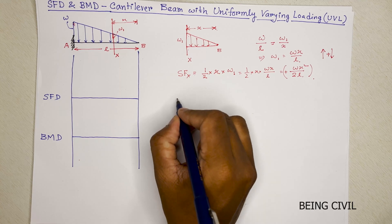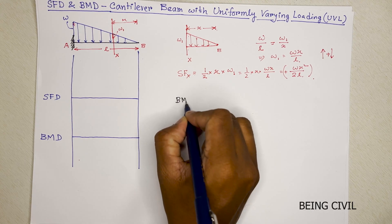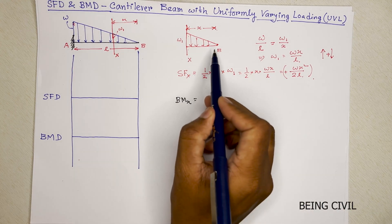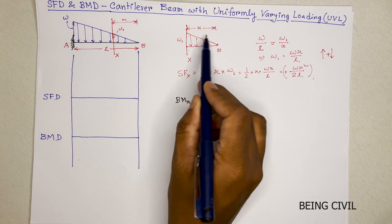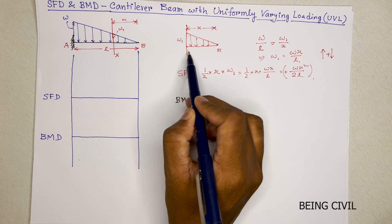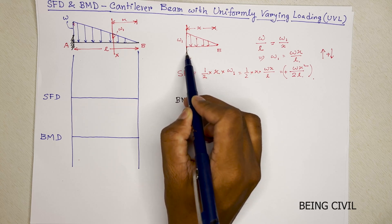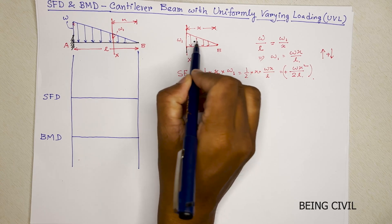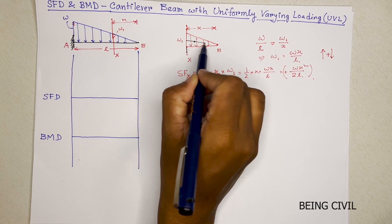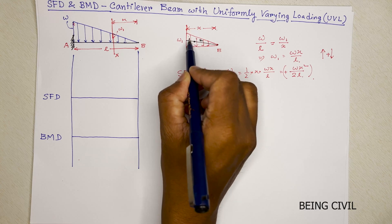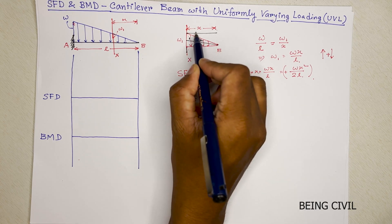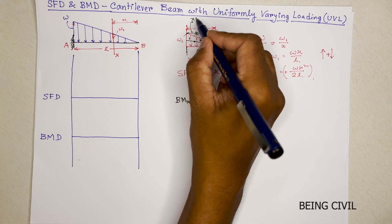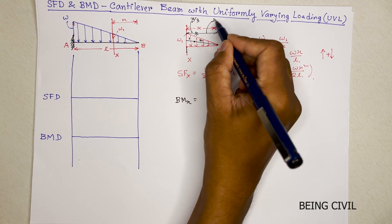Now we have to calculate the bending moment at this section x. Bending moment is the load of this section into the CG distance from this section. You all know that if this is CG, it cuts in 2 is to 1 ratio. So the horizontal distance will be x by 3 and this distance will be 2x by 3.